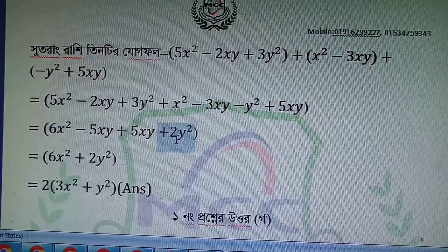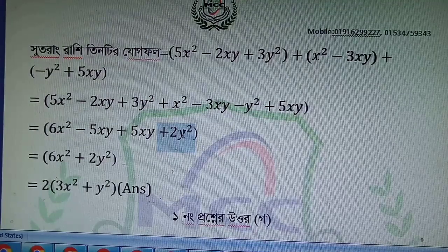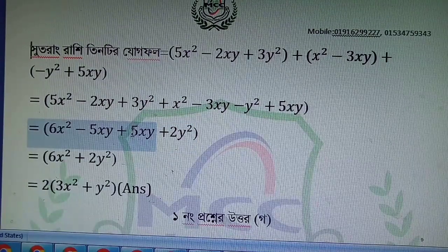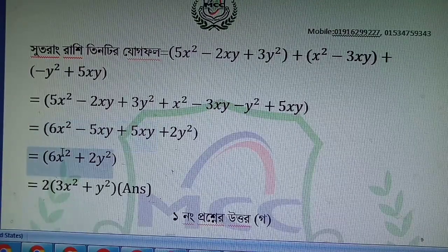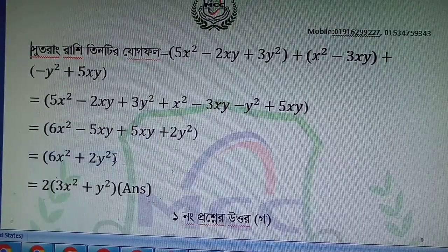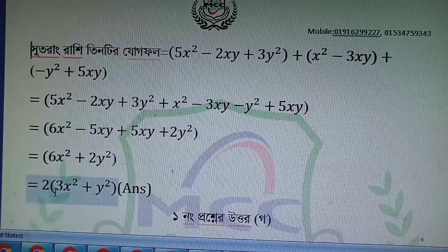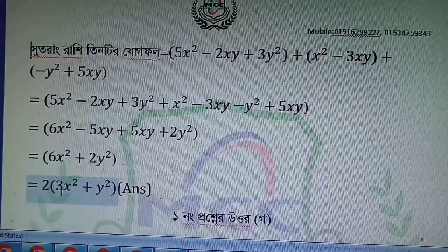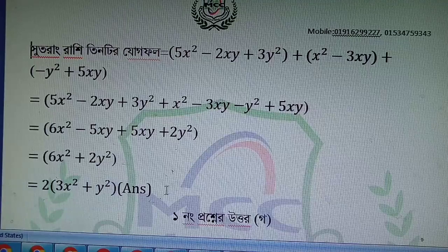So minus 5xy plus 5xy cancel. Then I'm going to add 5xy to minus y², giving 6xy, and about 2y². The result is 3xy squared plus y squared.